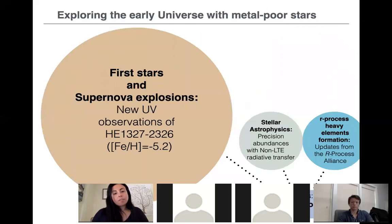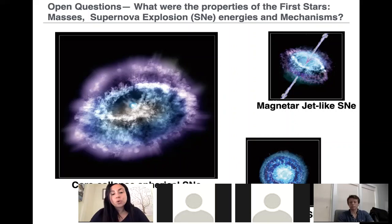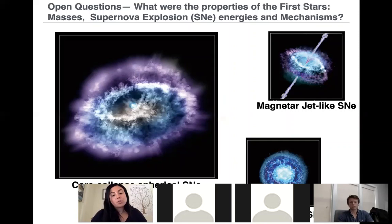Starting with our understanding of the first stars and supernova explosions: one of the questions I'm interested in answering is what are the properties of the first stars and how can we use population II stars to answer them? As I showed from cosmological simulations, they are unable to constrain well the masses or mass ranges of the very first stars — they give only an approximate range. What we hope with observations is to be able to further constrain this number, particularly the masses, because this will also allow us to constrain the type of supernova explosions they underwent.